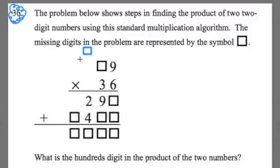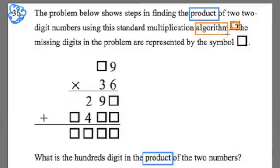Notice we have that word product appearing a couple times. And then we also have that algorithm word, standard multiplication algorithm. And then we also have words like digit, represent, hundreds. That's your cues for place value.